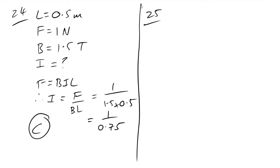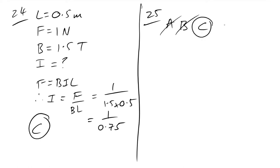Question 25: what is NOT an assumption of kinetic theory? A — elastic collisions with container walls: true, not the answer. B — negligible size compared to separation: true. C — travel between walls in negligibly short times: that is NOT a standard assumption. D — collisions last short times: true. The answer is C.